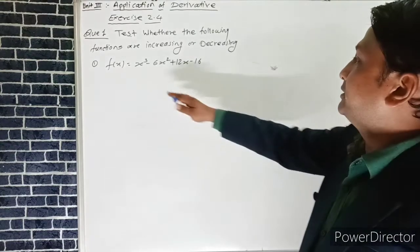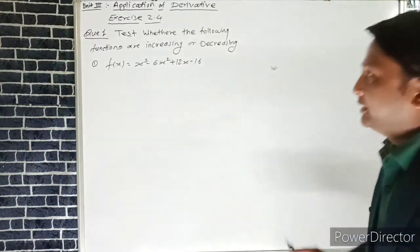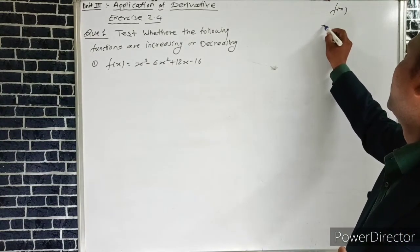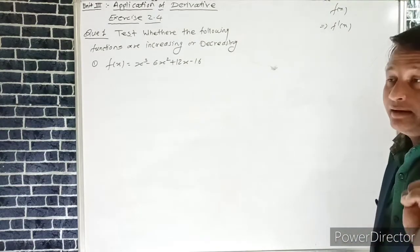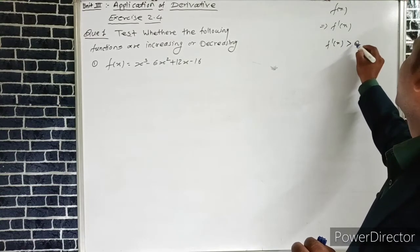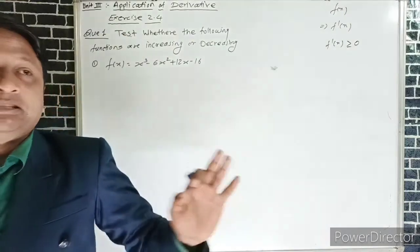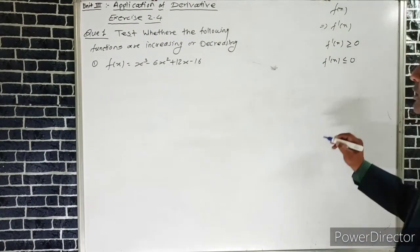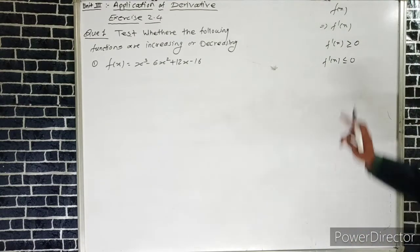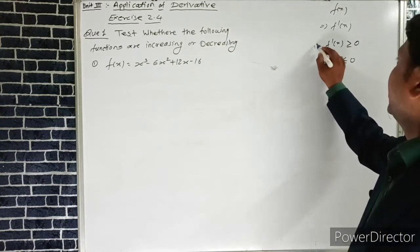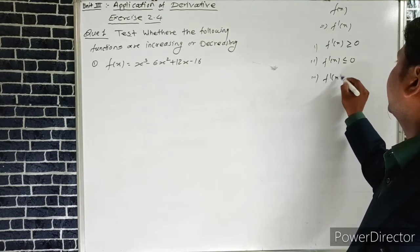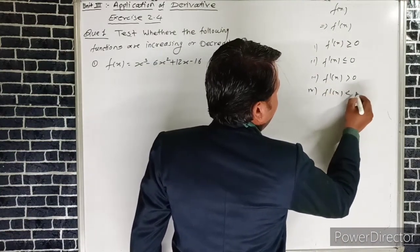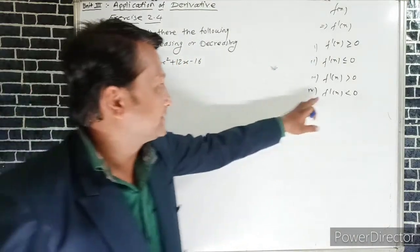The given function is f(x) = x³ - 6x² + 12x - 16. After differentiating, we get f'(x). If f'(x) ≥ 0, the function is increasing at that point. If f'(x) ≤ 0, the function is decreasing at that point. If f'(x) > 0 strictly, the function is strictly increasing, and if f'(x) < 0 strictly, the function is strictly decreasing.